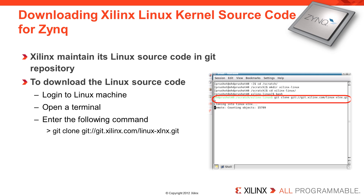Xilinx is striving to push code from the Xilinx git server to the open source community, such as kernel.org, uBoot, etc. Xilinx makes every effort to ensure that the Xilinx git servers contain the latest codebase and it is recommended for customer use. A minimal BSP for Zynq has been pushed to the mainline kernel.org and is available there. At this time, Xilinx only supports Linux from the Xilinx git server.